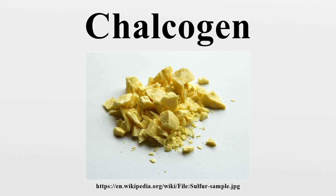Sulfur has over 20 known allotropes, which is more than any other element except carbon. The most common allotropes are in the form of eight-atom rings, but other molecular allotropes that contain as few as two atoms or as many as 20 are known. Other notable sulfur allotropes include rhombic sulfur and monoclinic sulfur. Rhombic sulfur is the more stable of the two. Monoclinic sulfur takes the form of long needles and is formed when liquid sulfur is cooled to slightly below its melting point. If liquid sulfur above 190 degrees Celsius is frozen very rapidly, the resulting sulfur is amorphous or plastic sulfur.